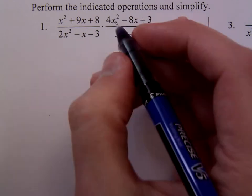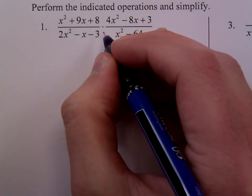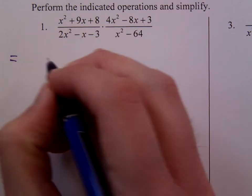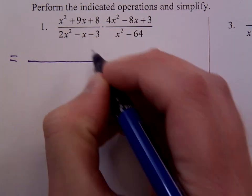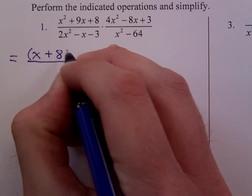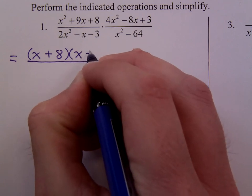So number one, we're trying to multiply. Whenever you reduce with multiplication, you have to have common factors. The first thing I need to do is factor everything. So x squared plus 9x plus 8 factors as x plus 8, x plus 1.